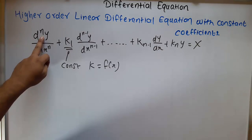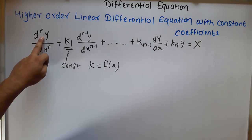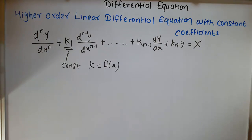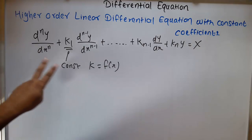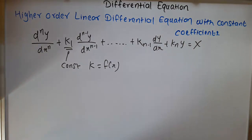If n equals 2 that will be the second order. If n equals 3 then that will be the third order. As n increases the order increases. So this notation is used for the higher order differential equation.